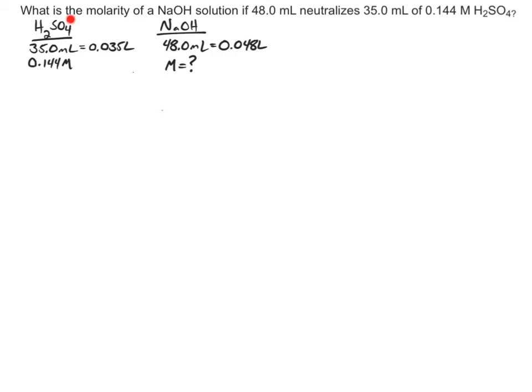So what I like to do is first just write out what I have. We have 35 milliliters of sulfuric acid, which is 0.035 liters, with a concentration of 0.144 molar. We also have the sodium hydroxide at 48 milliliters, which is 0.048 liters. And what we're really solving for is the molarity of that sodium hydroxide solution.